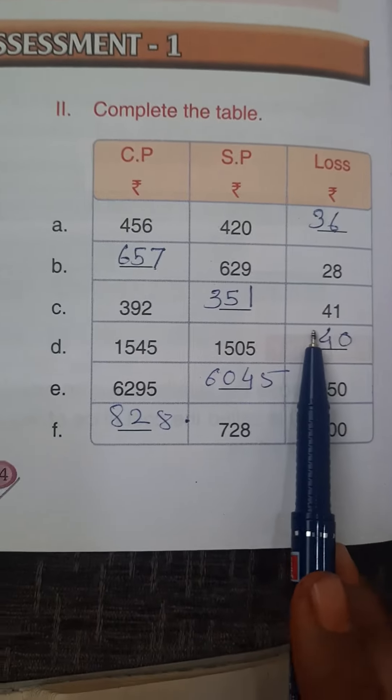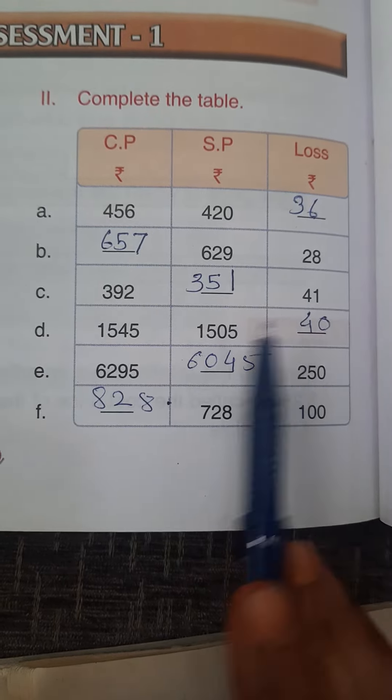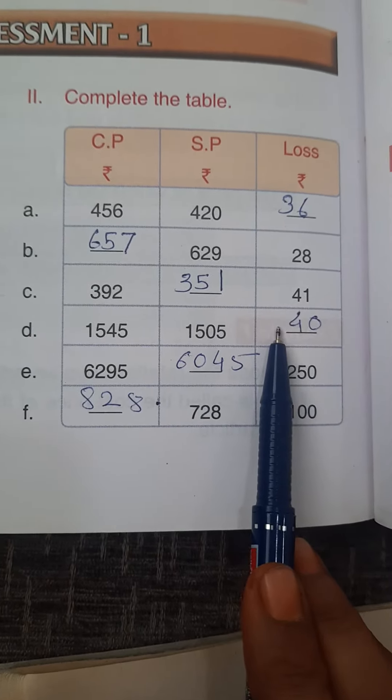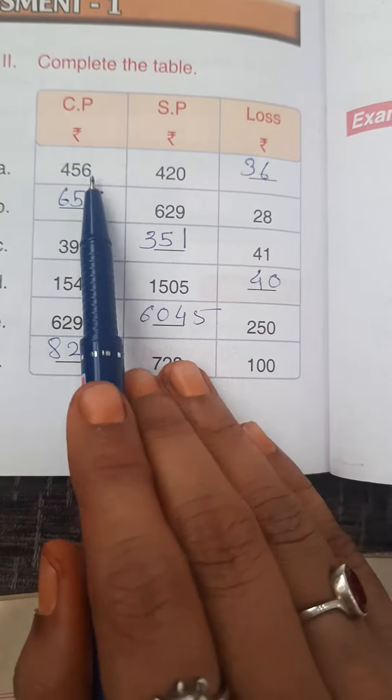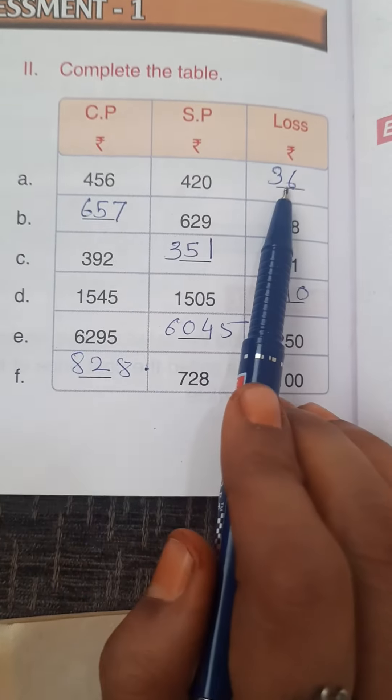So like that question, they give us table number 2 for loss. We'll solve that question using those structures. First one, look at here, they give us cost price, selling price and we just find the loss. We'll solve that question on that page.